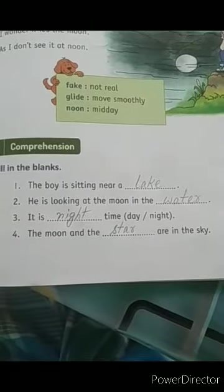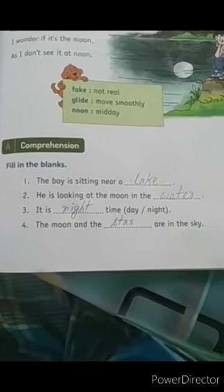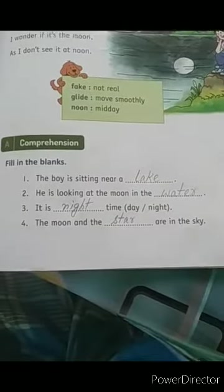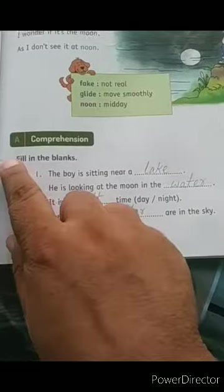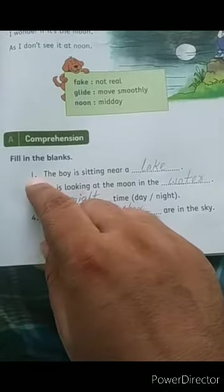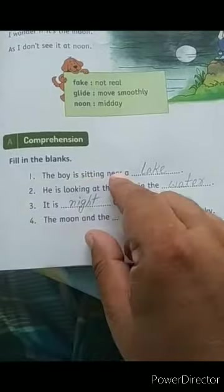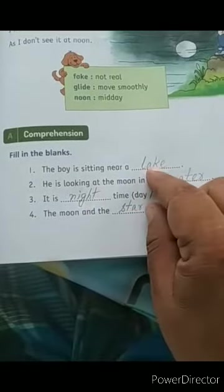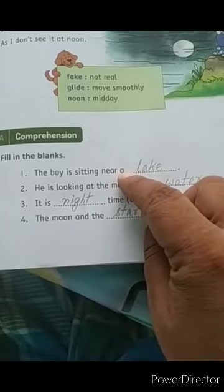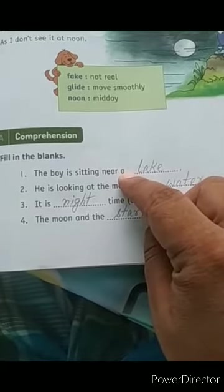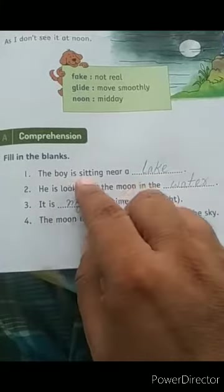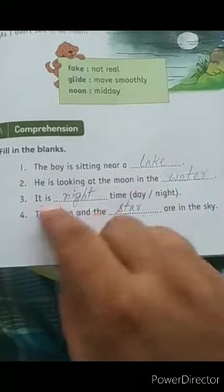Today I will do exercise section A comprehension. First question is fill in the blanks. Number one, the boy is sitting near a blank. What is the blank?